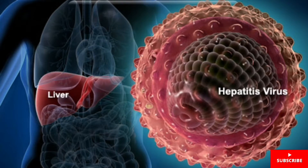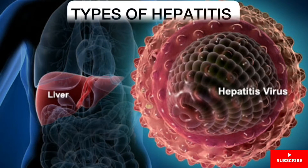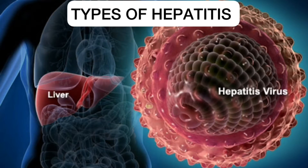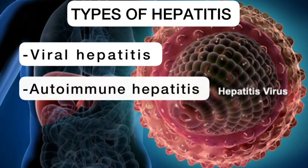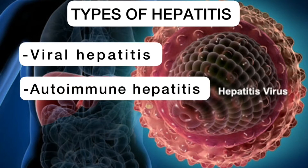Looking at the various types of Hepatitis, we have three main types: viral Hepatitis, autoimmune Hepatitis, and Hepatitis caused by alcohol and other toxins.